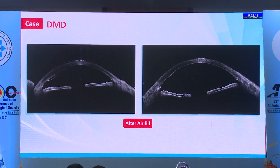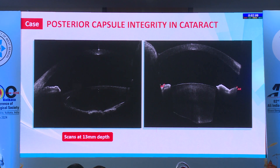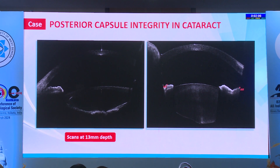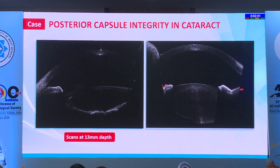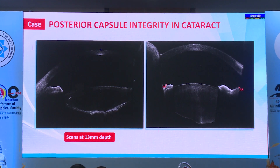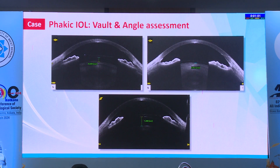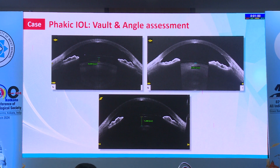This is a case of Descemet's membrane detachment diagnosed on ASOCT, and a case of posterior capsular integrity — preoperatively one is a posterior polar cataract, the other is traumatic posterior polar dehiscence. When you know this beforehand, you are well prepared in the OR for what you're dealing with, can prevent complications, and can counsel the patient accordingly.